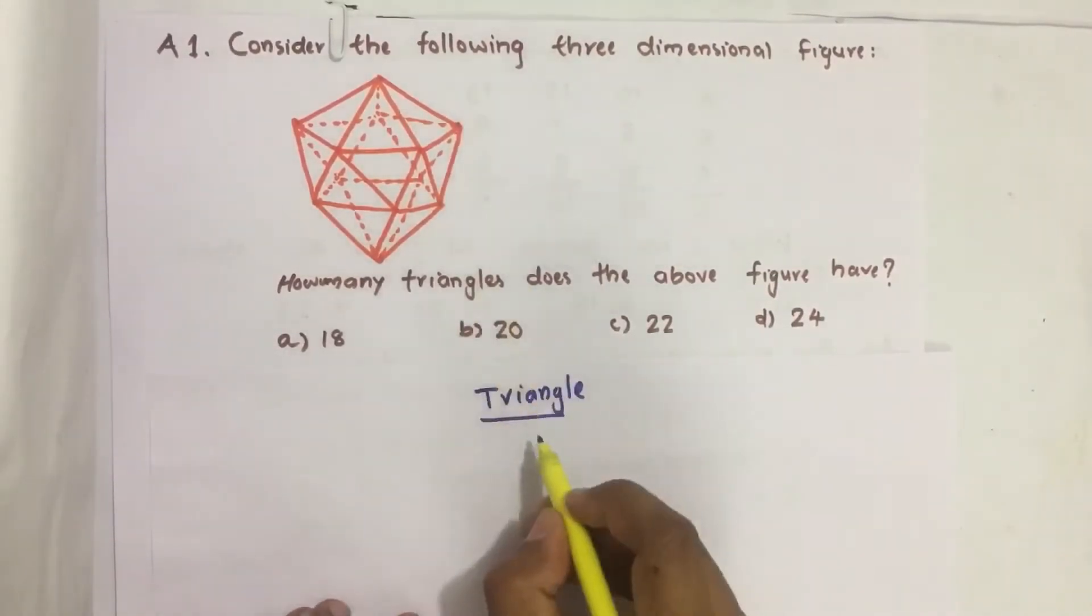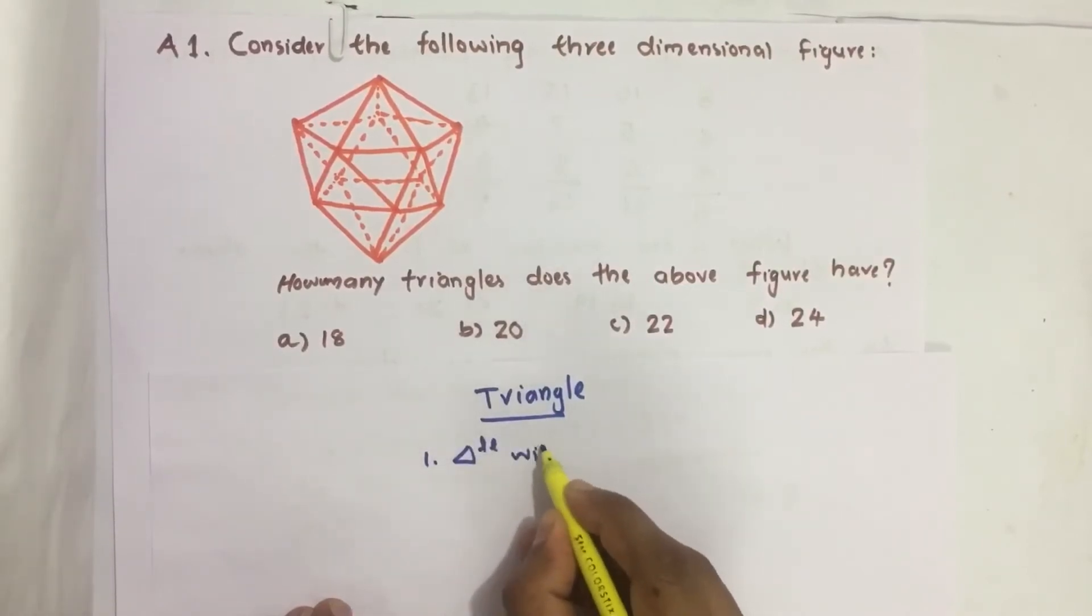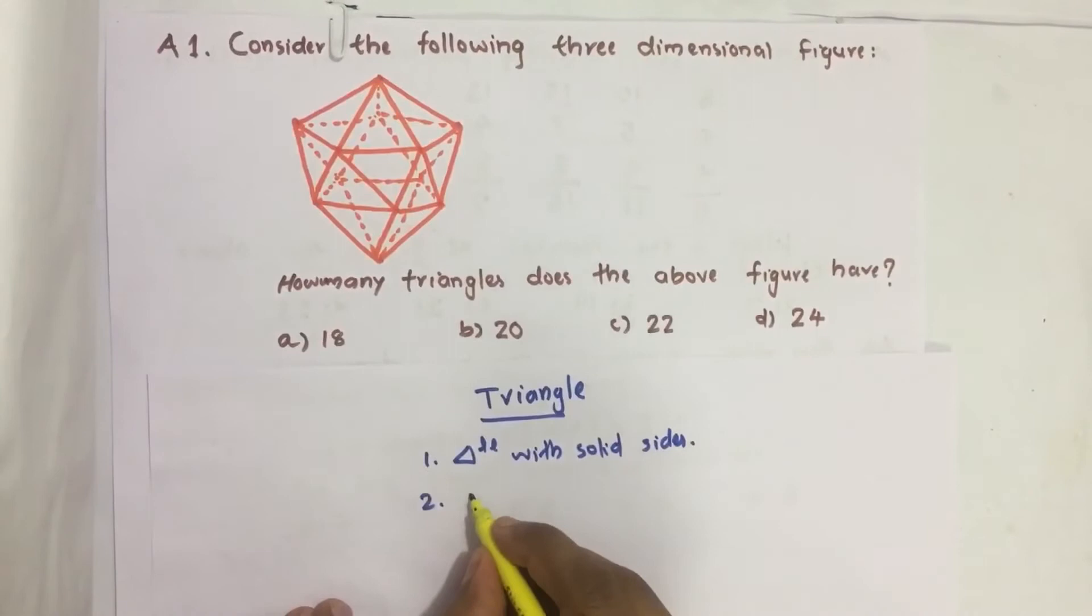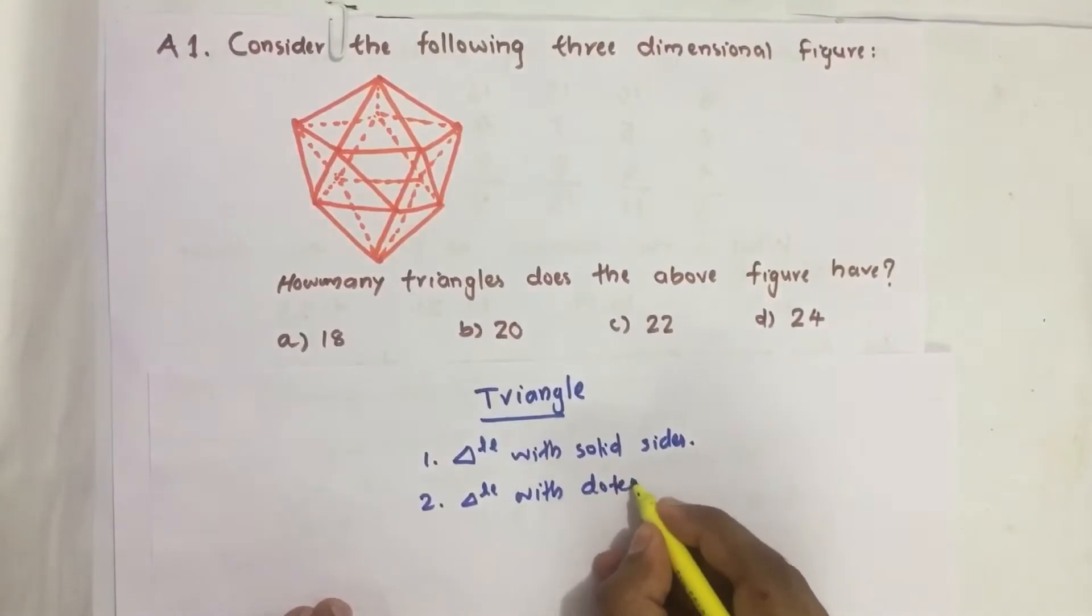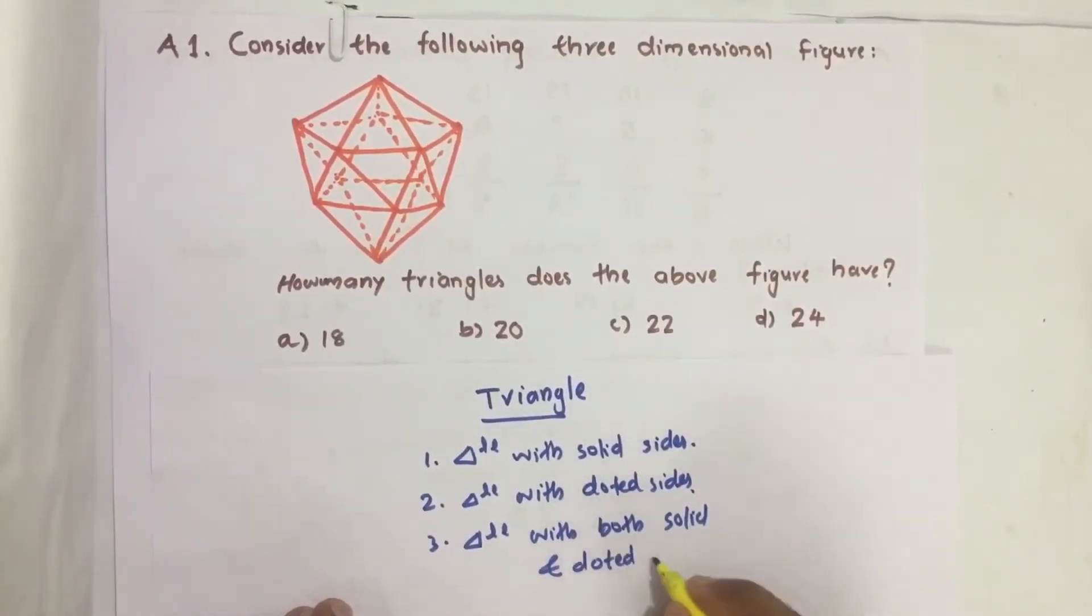So we are categorizing the types of triangles in this figure: triangles with solid sides, triangles with dotted sides, and triangles with both solid and dotted sides.